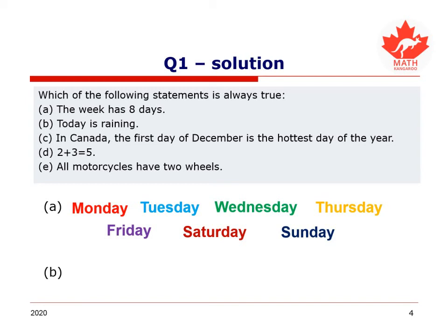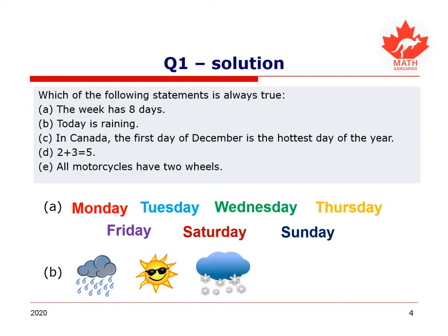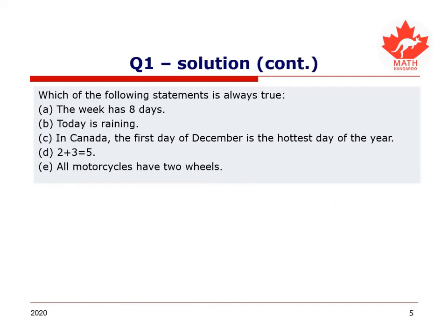How about B? It says today is raining. It might be raining when you are watching this video, or it might be sunny, or snowing, or there might be hail, or a lightning storm, or any sorts of weather. It might be true that statement B is true and today is raining, but it isn't always true — it will depend on what day you're watching. So it's not statement B either.